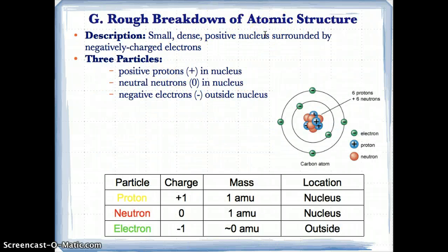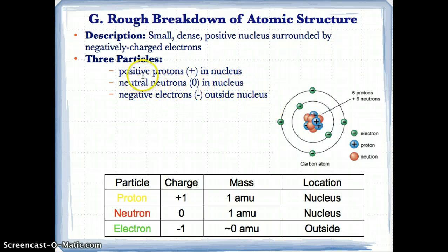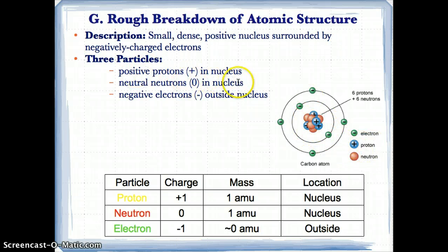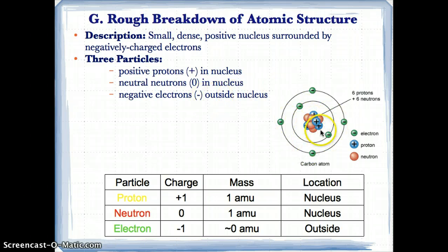To summarize atomic structure: there is a small, dense, positively charged nucleus surrounded by negatively charged electrons. Protons — think P for positive — are positively charged particles located in the nucleus, shown by the blue positive spheres. Neutrons have a charge of zero and are also located in the nucleus. So both protons and neutrons are in the nucleus.